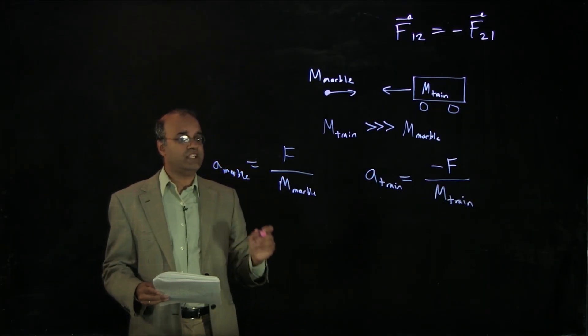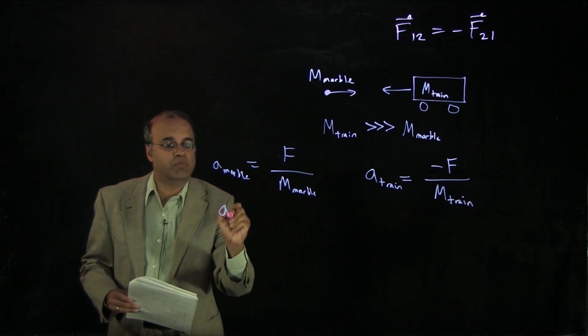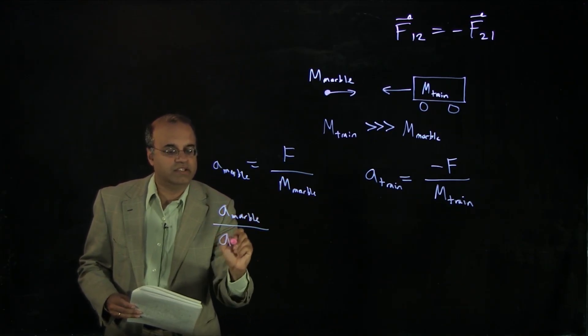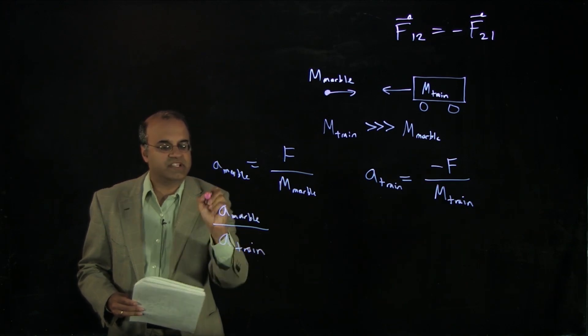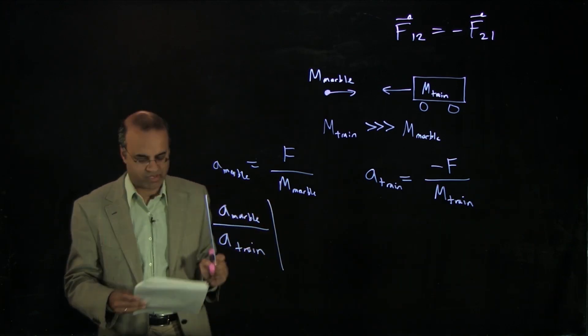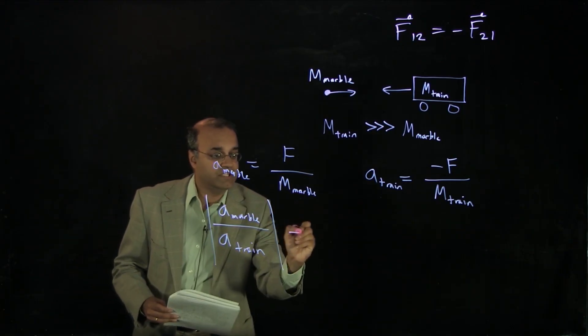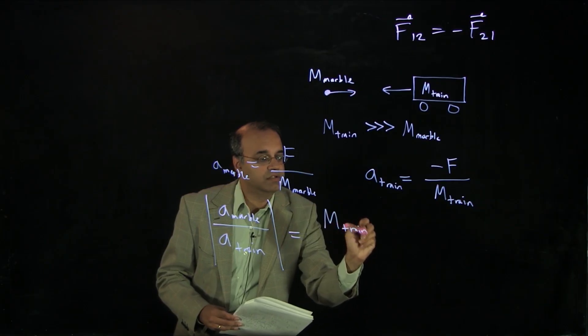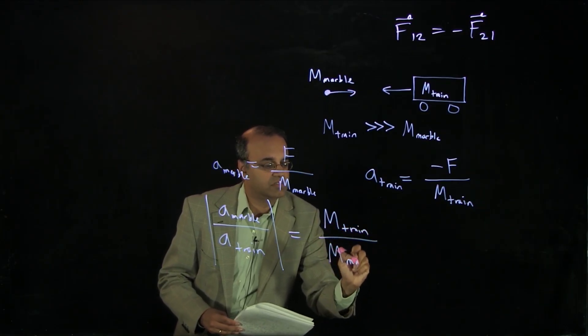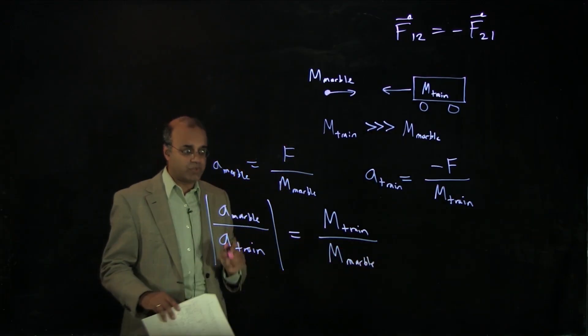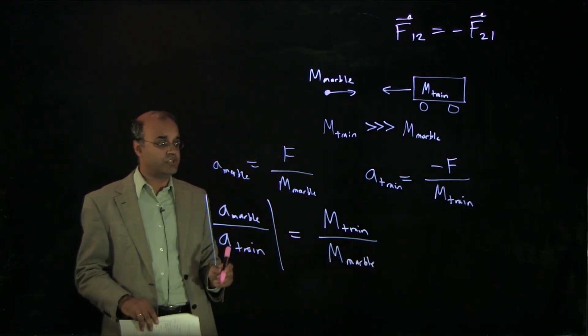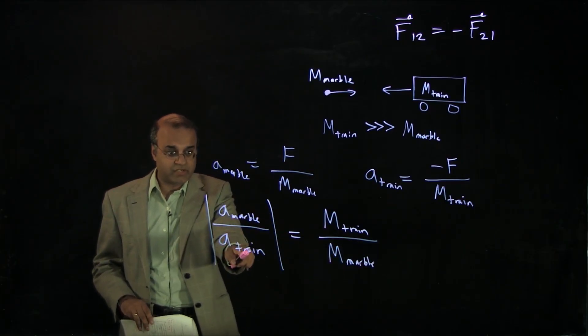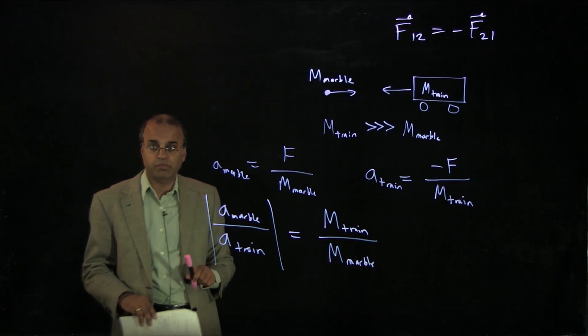If I want to look at the ratio, how big is the acceleration of the marble divided by the acceleration of the train? And let's take the absolute value, so we're just talking about magnitudes here. That's going to be equal to the mass of the train divided by the mass of the marble. But the mass of the train is much, much larger than the mass of the marble, so the right-hand side here is a very, very big number. And that tells us that relative to the acceleration of the train, the acceleration of the marble is going to be enormous.